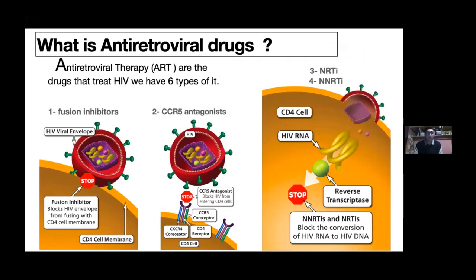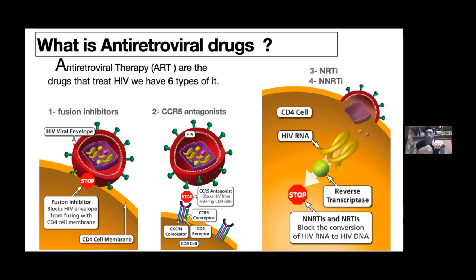The second family we will talk about is antiretroviral drugs — ART — which has six types. The first type is fusion inhibitors: drugs that inhibit the fusion between the HIV viral envelope and the CD4 cell membrane, so HIV cannot enter the cell and cannot release its genetic material. The second type is CCR5 inhibitors, or antagonists, which block the CCR5 receptors located on the surface of CD4 cells, so the virus cannot bind and cannot enter the cell.